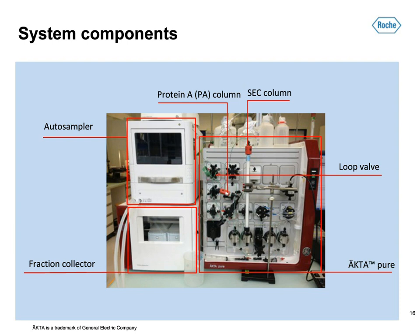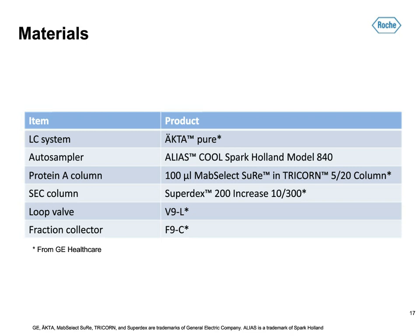Before finding the autosampler from Spark Holland, we only found autosamplers with fixed sample volumes or software connection issues with Unicorn. The big advantages of the Spark Holland model were: Unicorn has no issues with its software; we have a flexible and individually adjustable sample volume up to 9 ml; and it is coolable. The exact model is the ALIAS Cool model 840 from Spark Holland. For the protein A, we chose the MabSelect SuRe from GE, packed in a Tricorn 5/20 column with a column volume of 100 µL. We chose this small size to not get a too wide peak, as we wanted to collect just 500 µL in a loop, which is directly loaded onto the size exclusion column.